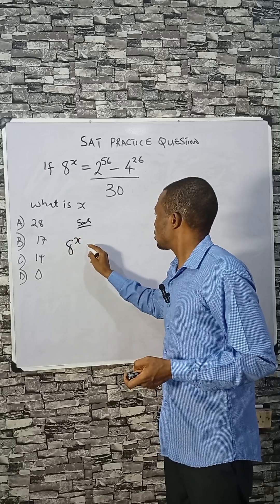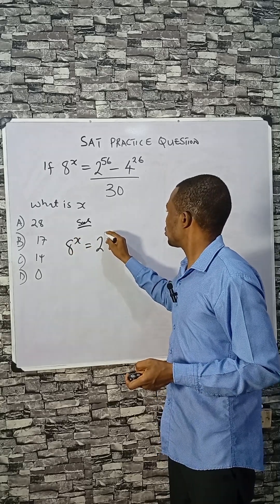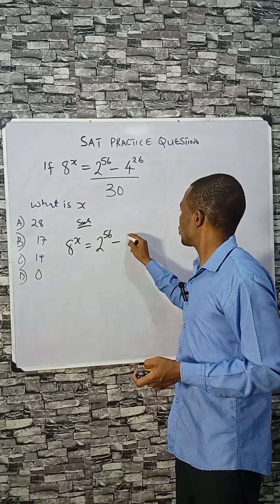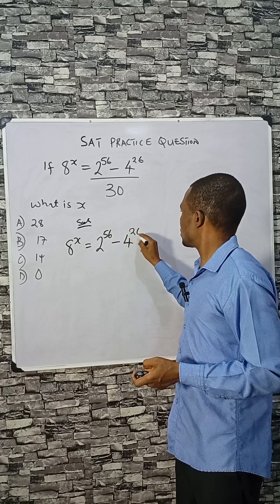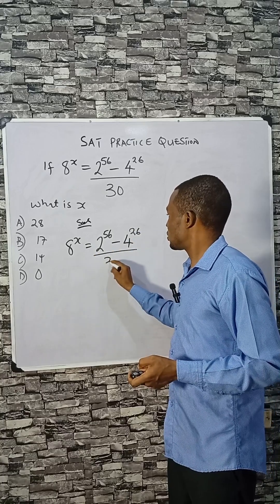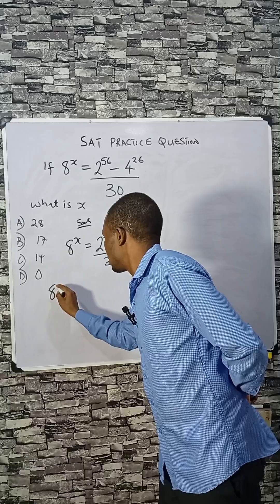8 raised to the power x equals 2 raised to 56 minus 4 raised to 26, divided by 18. We can write this as...